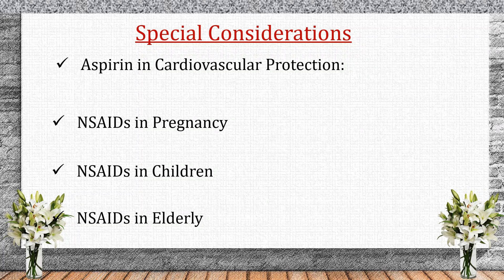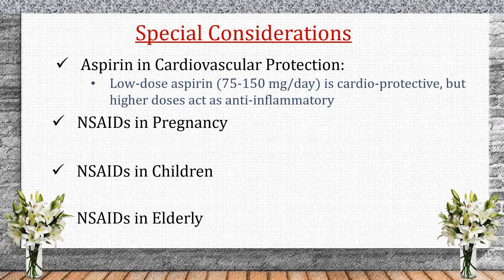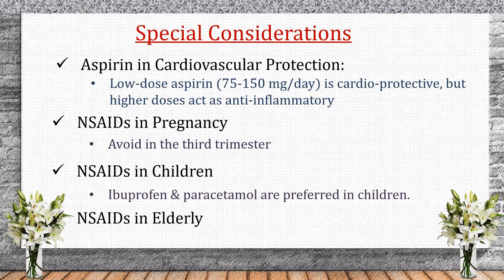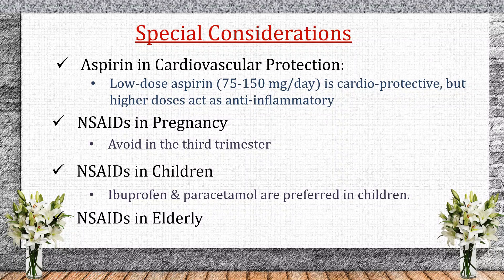Special considerations: Aspirin in cardiovascular protection — low-dose aspirin (75–150 mg/day) is used for heart attack and stroke prevention, while high doses act as an anti-inflammatory. NSAIDs in pregnancy should be avoided in the third trimester due to fetal risks. For children, ibuprofen and paracetamol are preferred for fever and pain management; aspirin should be avoided in children due to the risk of Reye's syndrome. In elderly patients, use the lowest effective dose to minimize side effects.